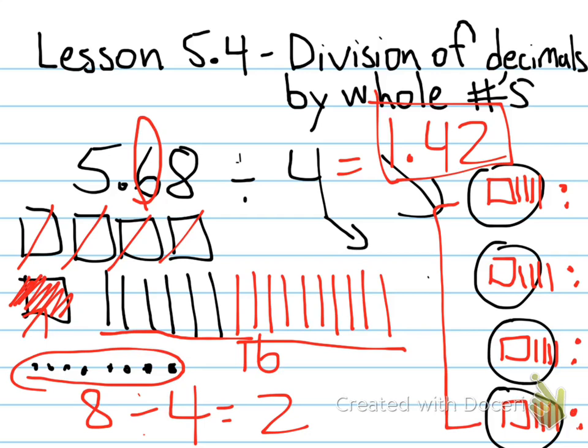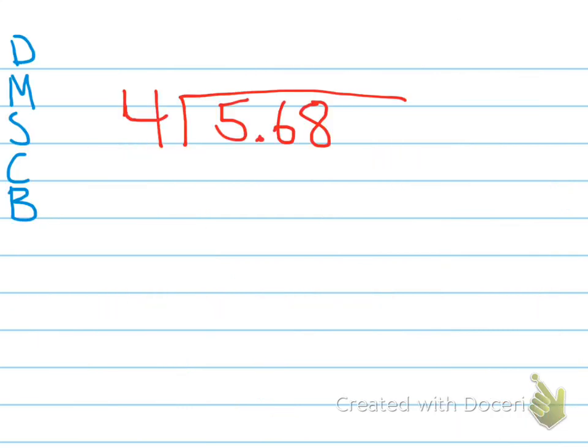Now when we solve that, we wouldn't have to use our QuickPix to model what that would look like. If we were using our standard algorithm to solve that problem, it would look something like this. We would set up our problem, the same exact problem, 5 and 68 hundredths being divided by 4. And the way I teach is to remember that if we have a dividend that is a decimal, what we want to do is we want to place that decimal directly above where it is in the dividend, so we don't forget to place that later on.